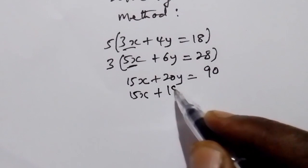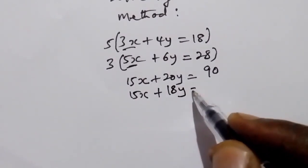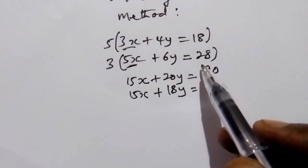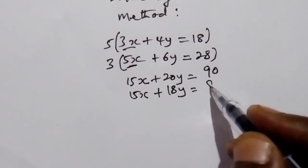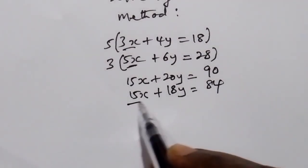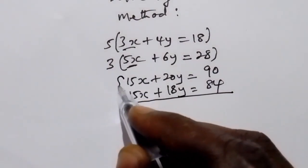18y. 3 by 28 is 84. Now we can subtract.